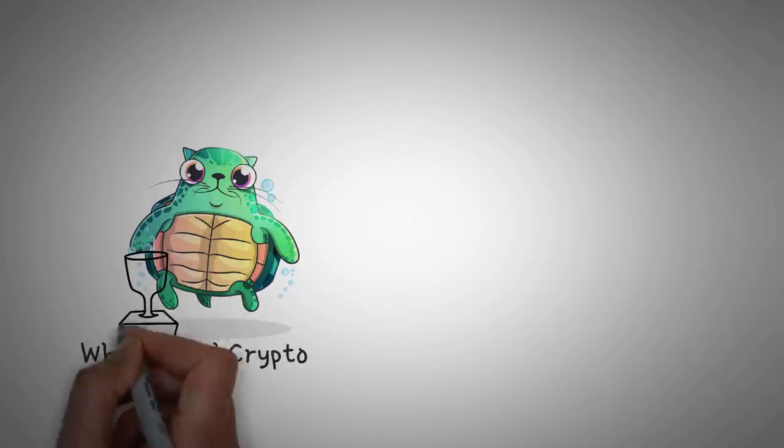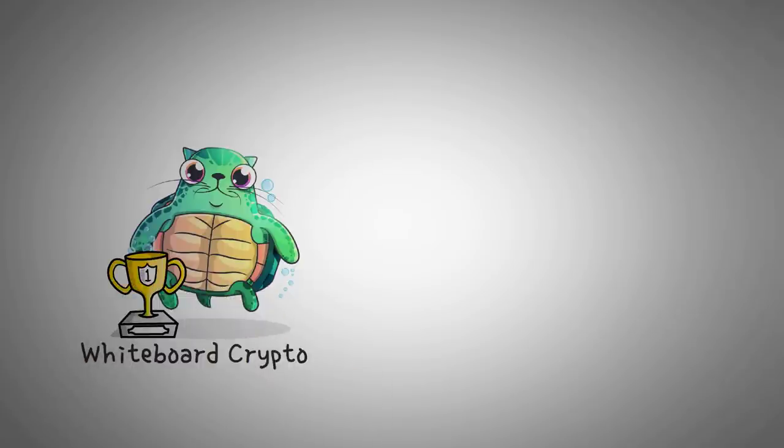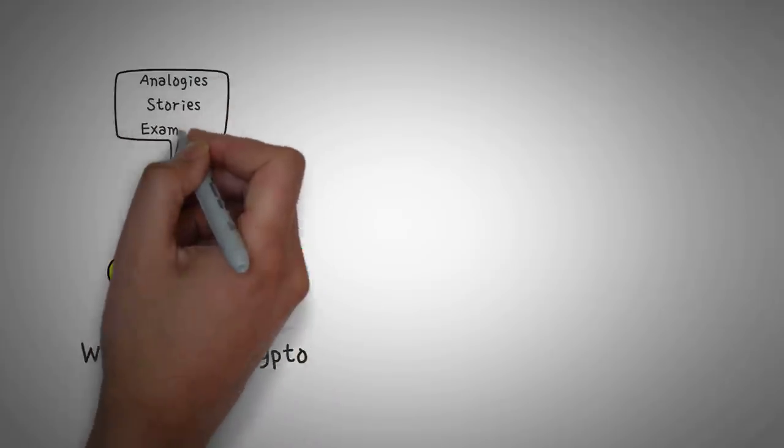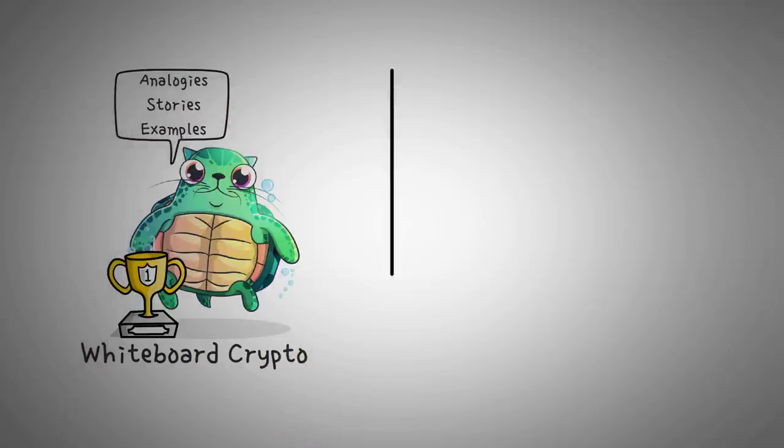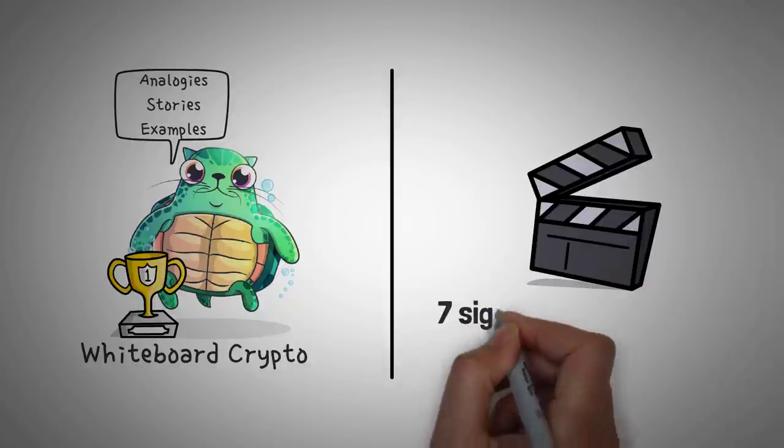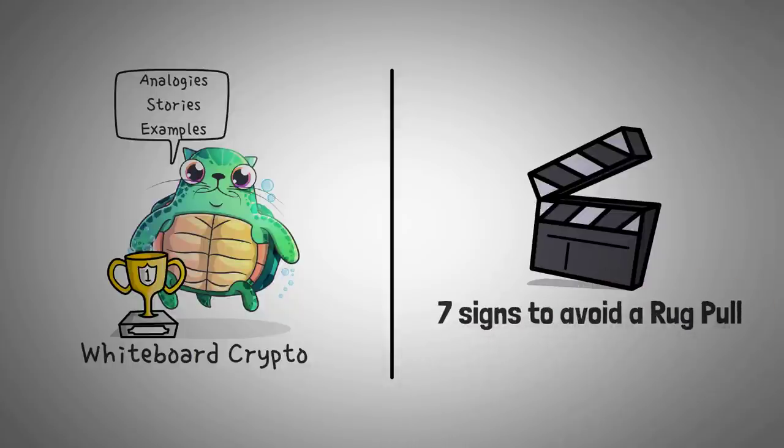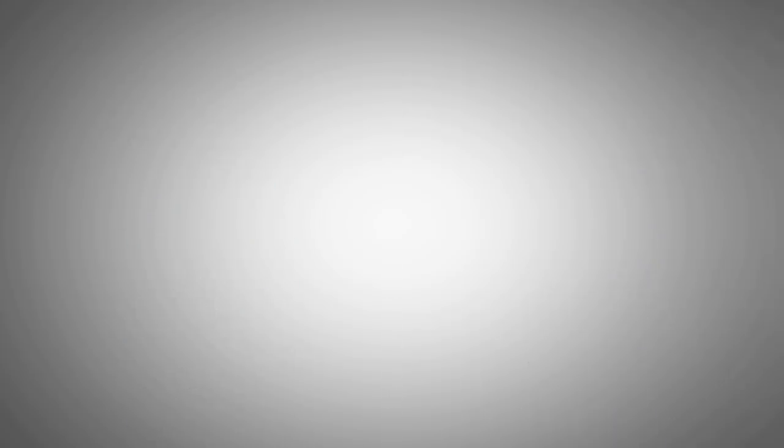Welcome to Whiteboard Crypto, the number one YouTube channel for crypto education. Here we explain topics of the cryptocurrency world using analogies, stories, and examples so that you can easily understand them. In this video, we're going to explain seven signs that you can look for to avoid a rug pull. Let's dig right in without skipping a bunch of formalities.